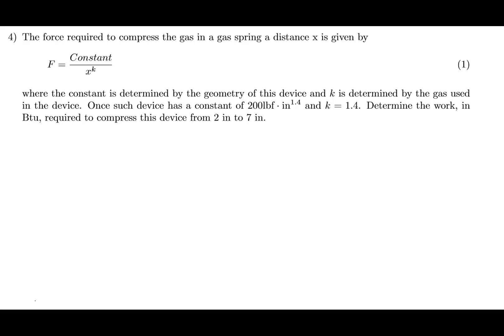In this problem we have a gas spring, so I'm going to draw a picture of what that might look like. We have basically a piston cylinder that has a spring in it, and there's gas in here. We're compressing that spring. The problem gives us the force required to compress the gas in a gas spring at a distance x, so it's being compressed a certain distance x.